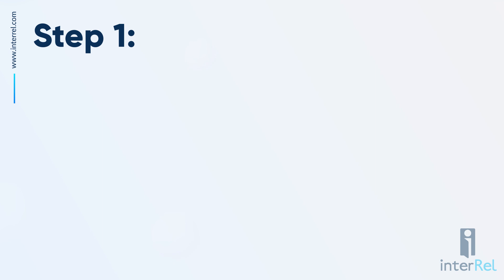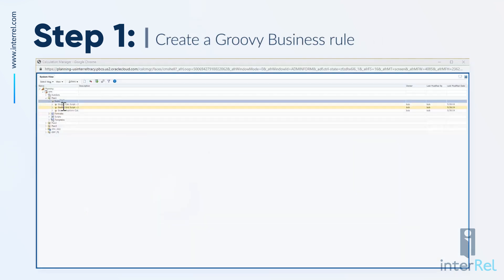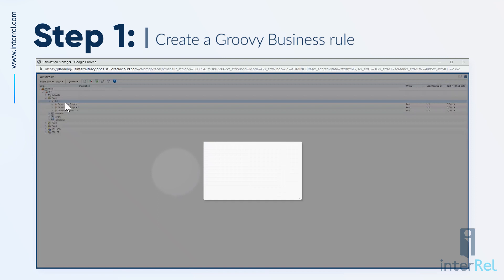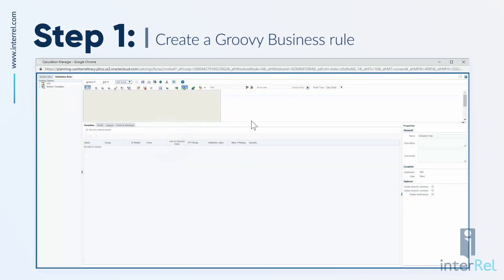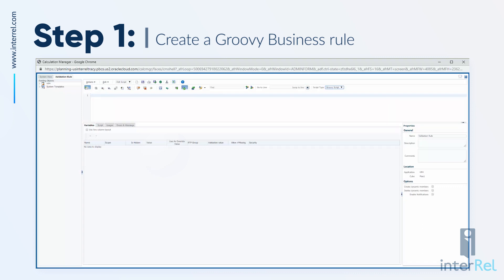We are going to first create our groovy business rule, so from within calc manager I will create my new business rule. I will change my design mode to edit mode and then for my script type I will change it from calc script to groovy, and now I am ready to begin scripting my groovy business rule.